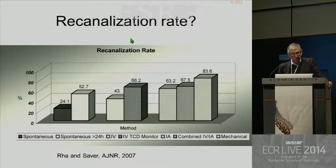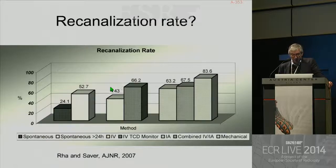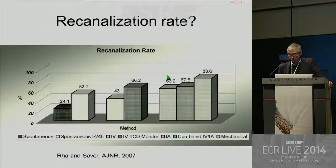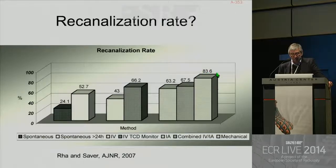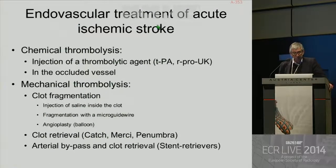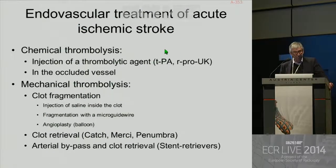Recanalization rate with IV thrombolysis is 43%. Recanalization with IA treatment is 63%, whatever the kind of IA treatment. And with mechanical endovascular treatment, the rate of recanalization is even higher at 83%. So endovascular treatment of acute ischemic stroke was developed in several steps.